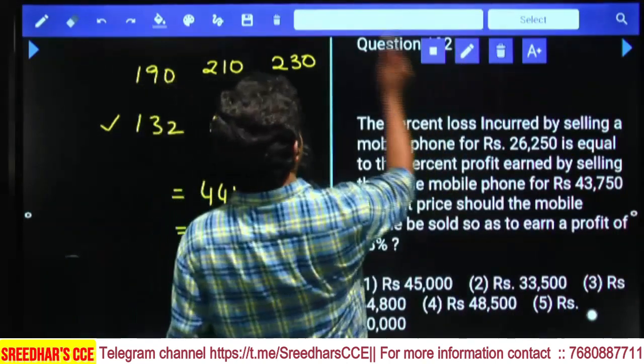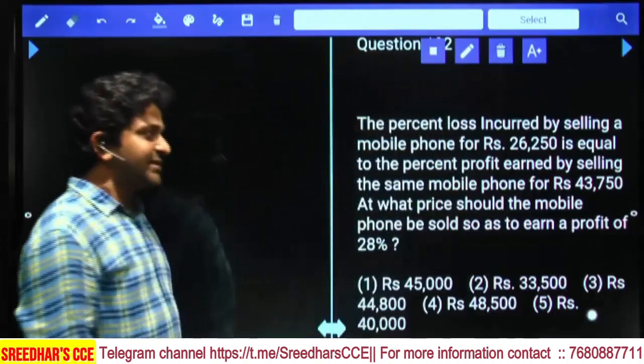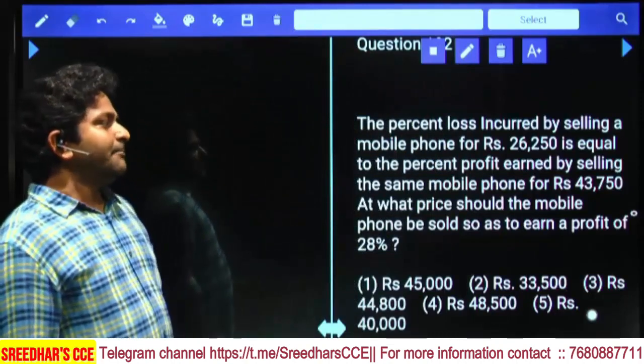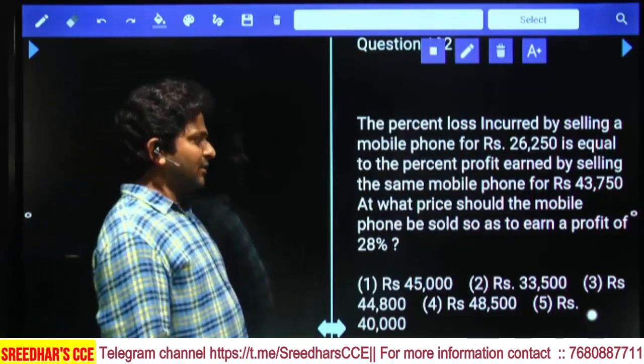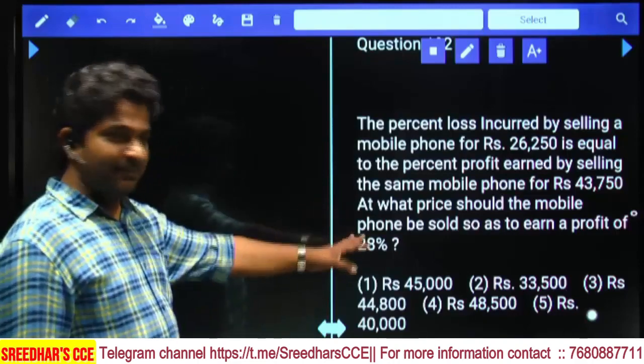The percentage loss incurred by selling a mobile phone for 26,250 is equal to the percentage of profit. This is already done, repeated question.